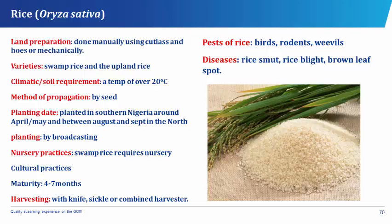Swamp rice requires nursery, which is done in fertile water-soaked soil. Seeds are broadcast and germination begins after 4–5 days and the seedlings are transplanted at between 7–8 weeks of growth to the field. Seeds are sown in nursery around May to June and transplanted in July to August. The spacing between each plant should be about 25 cm to 30 cm apart depending on variety.